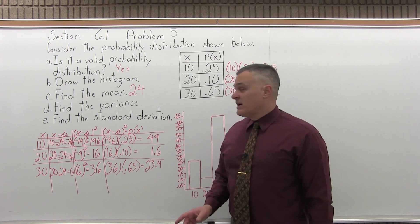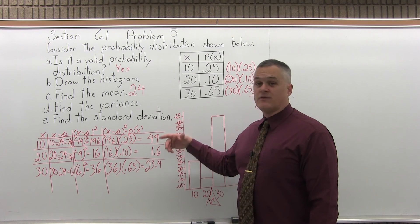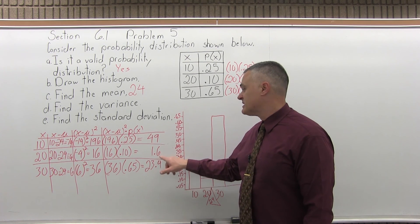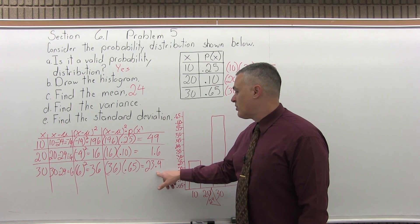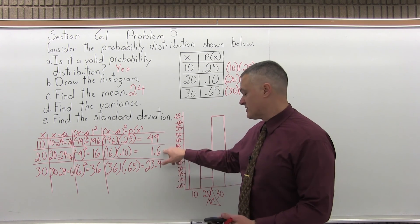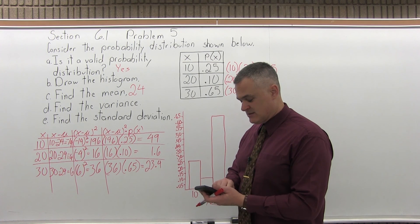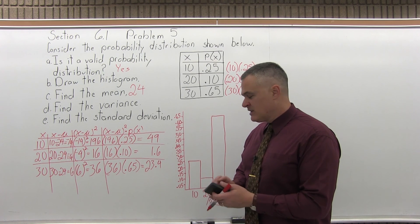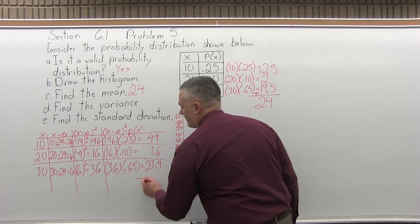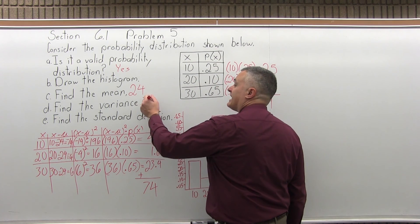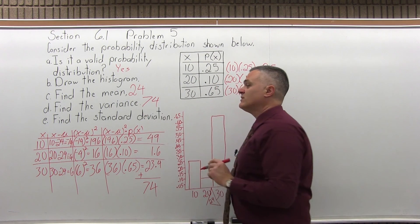So now I have the whole chart filled out. What I need to do to finish off the question what's the variance is I have to add 49 plus 1.6 plus 23.4. No, 23.4 is still on the screen of the calculator. So I'll just add 1.6 plus the top value is 49. Gives me a total of 74. I get a total of all the values in that last column, 74. So that's the variance. The variance is 74.